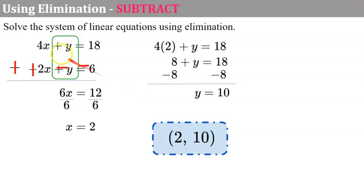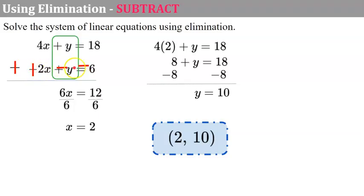Let's check. 4 times 2 is 8; 8 plus 10 is 18 — it checks. Negative 2 times 2 is negative 4; negative 4 add 10 is 6. Remember we're going back to the original equation to check, ignoring the red positive and negative signs.